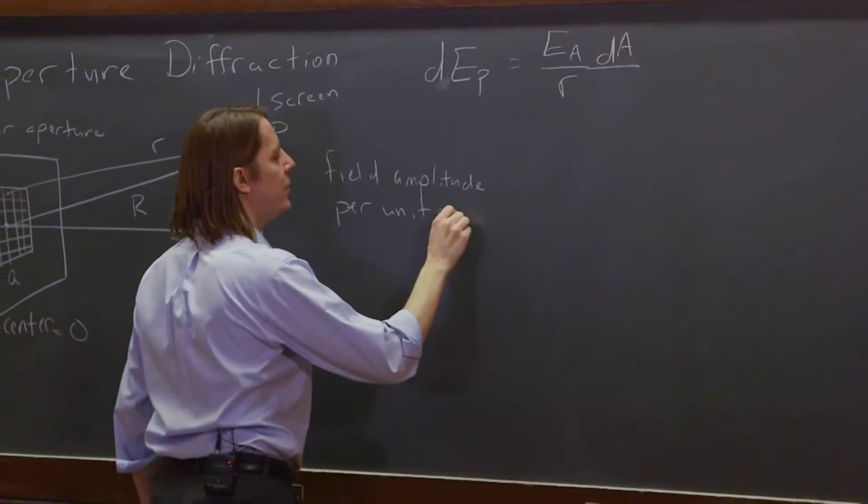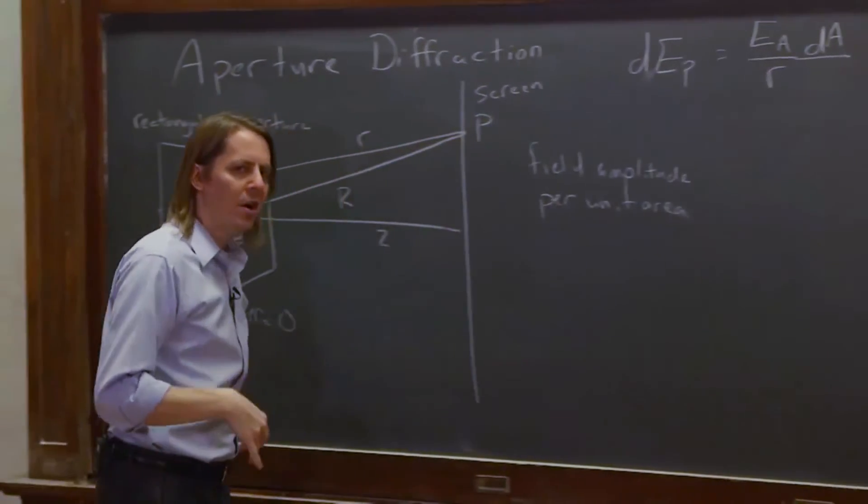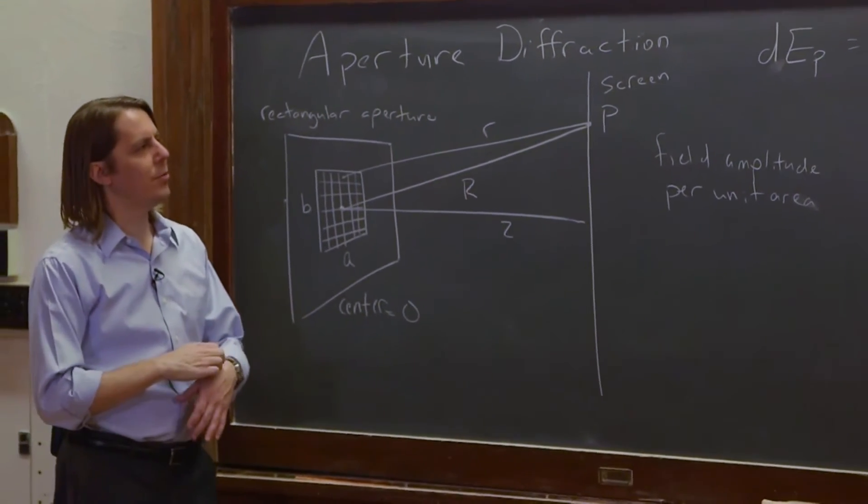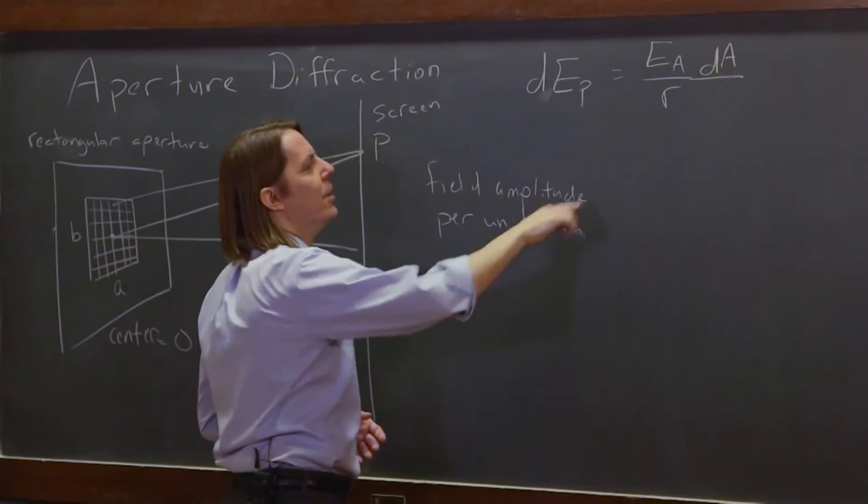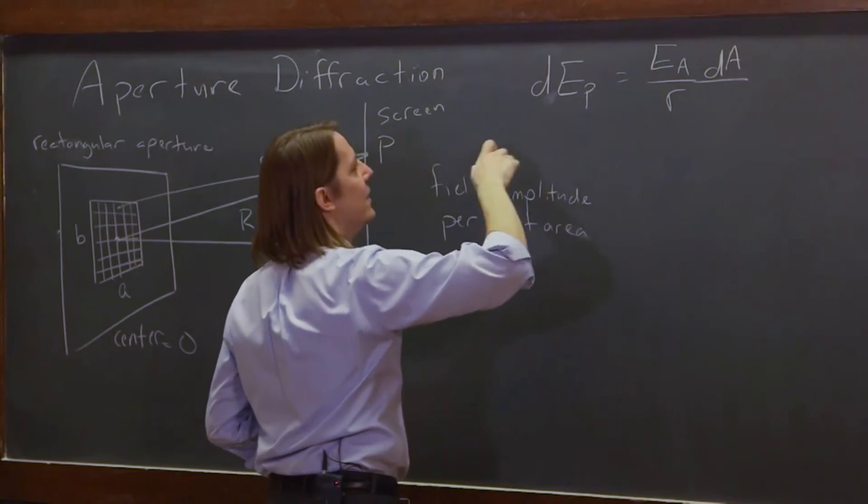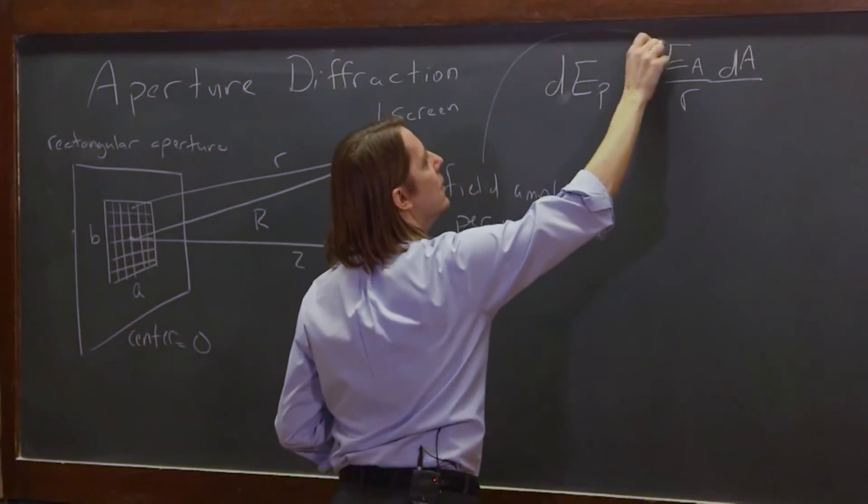So I'm bypassing what we did for the slit, where we call it E naught. Let's just go right off the bat. Ea is the field amplitude E naught per unit area. So you multiply it by dA, and that's kind of like E naught.